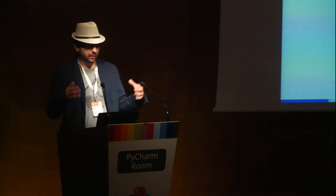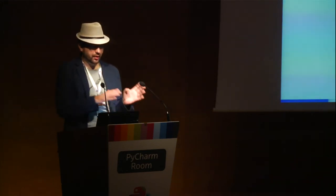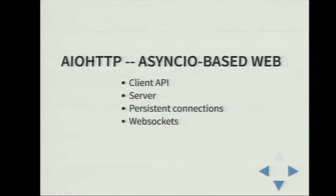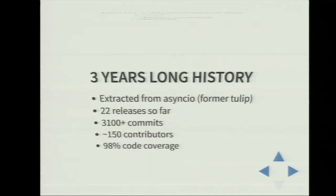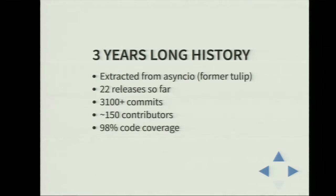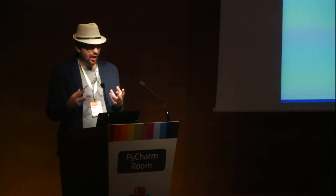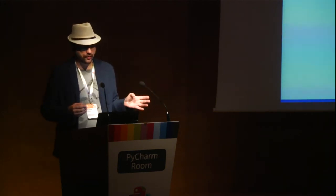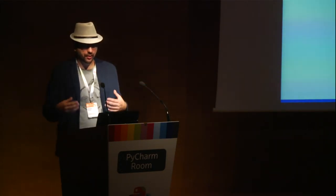aiohttp is a library designed to work with the web, to handle HTTP from both sides — server and client. It supports persistent connections and WebSockets out of the box, and many other things I'll describe later. The library has a three-year-long story. At the very beginning it was part of asyncio — at that time it was called tulip — but Guido asked to rip it out. We started it as a new project, aiohttp. It was a good decision because asyncio was very young in those days and changed quickly. We have released 22 releases so far, much faster than the asyncio release cycle.